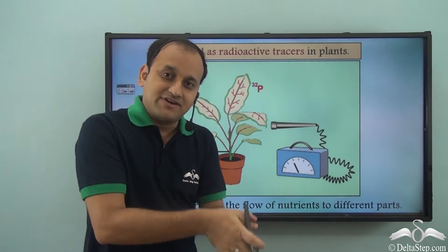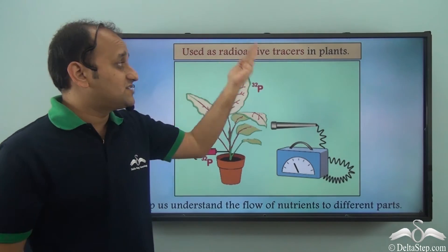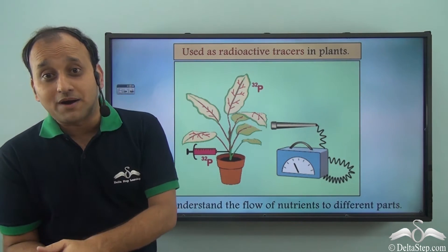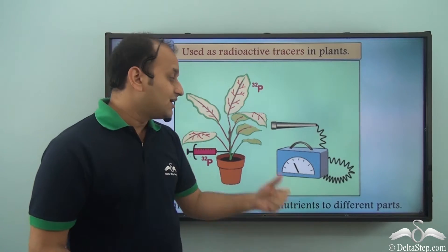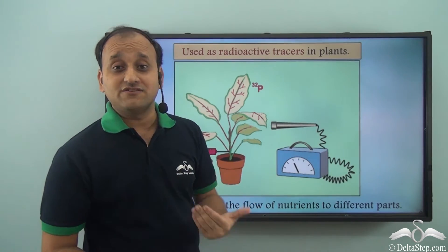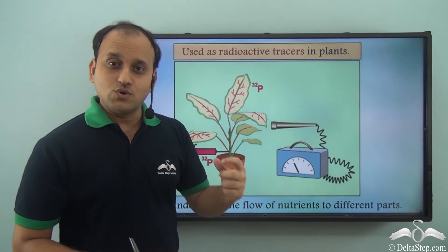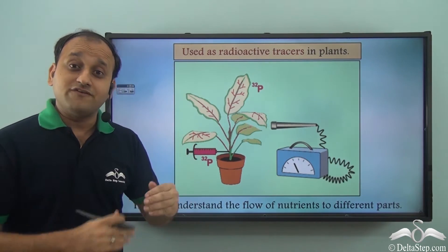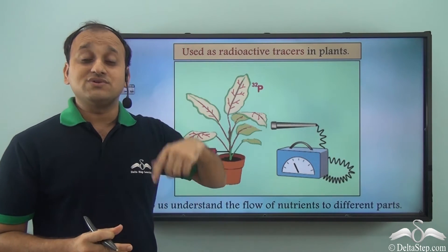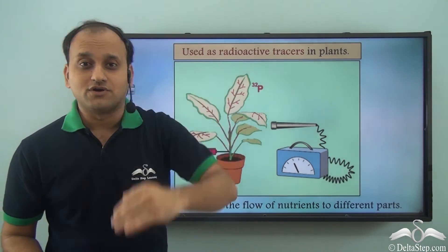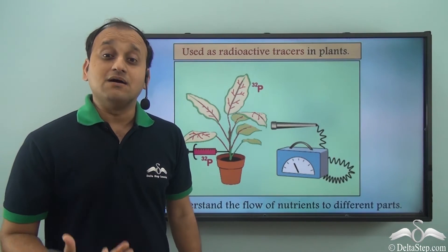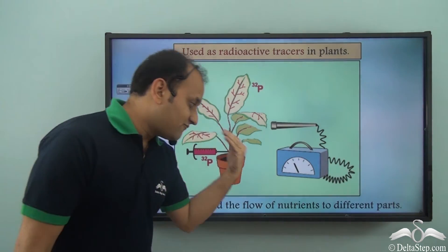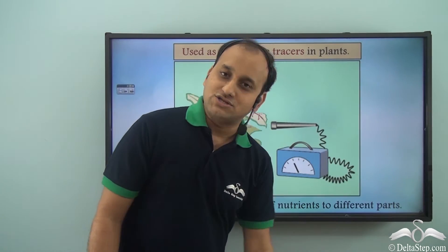Radioactive tracers are also used in plant research. If we want to understand which nutrient goes to which part of the plant, radioactive tracers are mixed with essential nutrients and injected into the plant. The nutrients travel to the desired location, and because of the radioactive tracer mixed with them, we can track the movement and know which nutrient goes to which part of the plant.